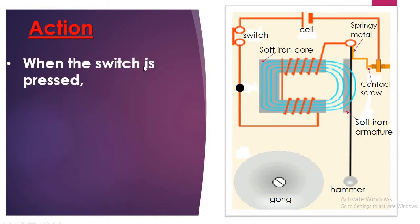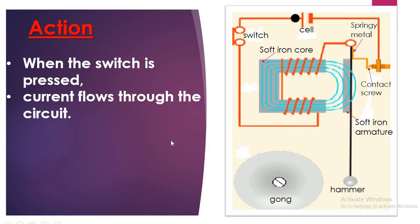When the switch is pressed, this is our switch. Pressing the switch means that you have a complete circuit. What do we expect? Current flows through the circuit. And conventional current flows from the positive terminal of the cell to the negative terminal, as demonstrated here. That's how the current is going to flow through the circuit.